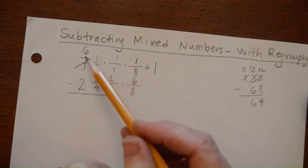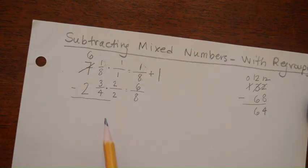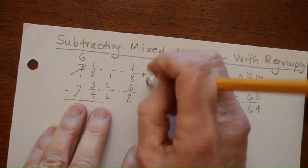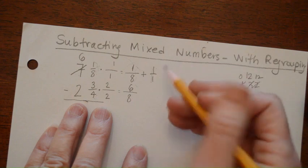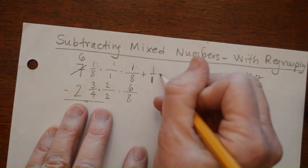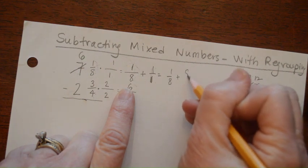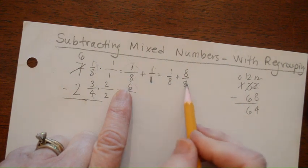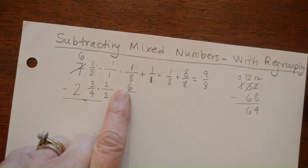So now instead of 7 and 1 eighth, I have 6 and 1 eighth plus 1. I've done a little switcheroo and given 1 to the 1 eighth. We always need common denominators when we add fractions — this 1 whole would be 8 eighths. So I'm going to change 1 eighth plus 1 into 1 eighth plus 8 eighths, and this becomes 9 eighths. Where 1 and 1 eighth equals 9 eighths — that's the same thing we did when converting mixed numbers to improper fractions.